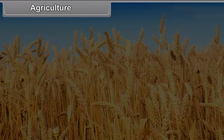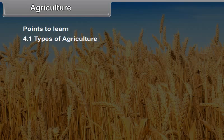Chapter number 4: Agriculture. Points to learn — Types of agriculture: Number 1, Intensive agriculture.